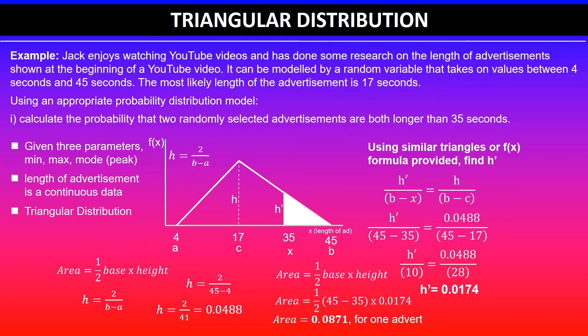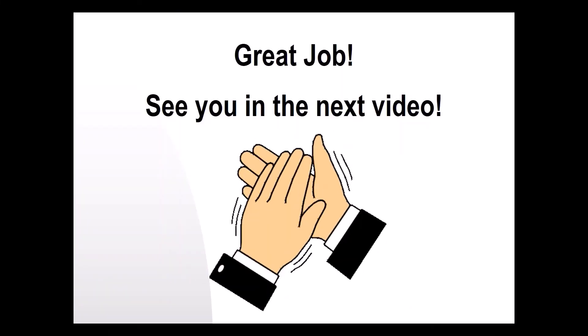Once you've got that, write the answer in context. The probability that two randomly selected advertisements are both longer than 35 seconds is 0.00759. I hope this makes sense. Thanks for watching, I will see you guys in the next video.